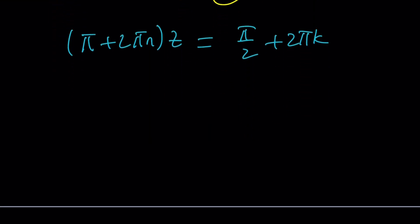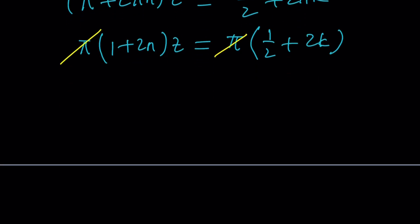If you take out a pi here you're going to get 1 plus 2 n times z and here if you take out pi you're going to get 1 half plus 2 k and pi also cancels out because pi is not 0. From here we can get z, we can write it as 2 k plus 1 half divided by 2 n plus 1.